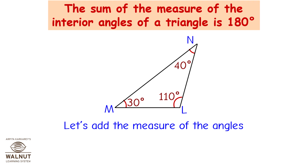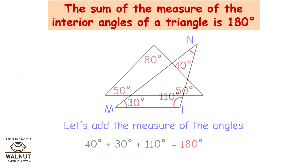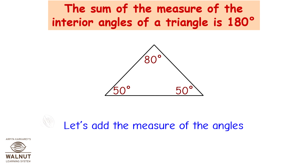Let's add the measures of the angles. 50 degrees plus 50 degrees plus 80 degrees is equal to 180 degrees.